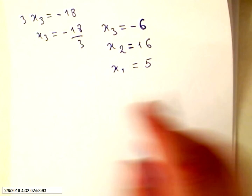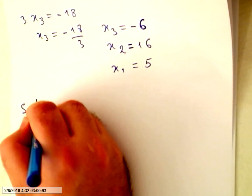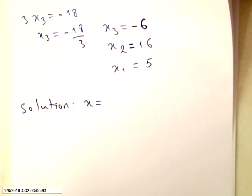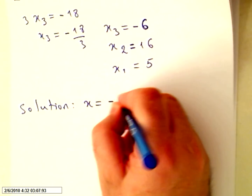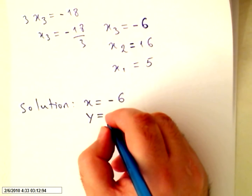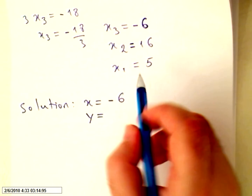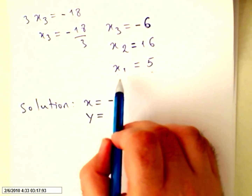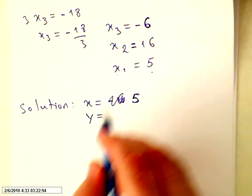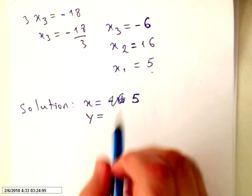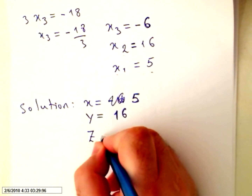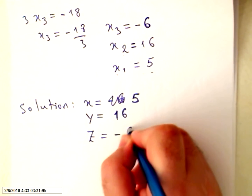Our solution will be: X equals 5, Y equals 16, and Z equals minus 6. This is the solution for our problem. We can back check — it's really easy.